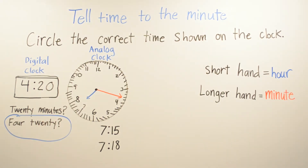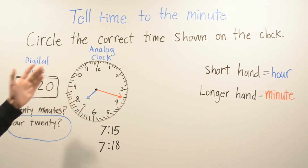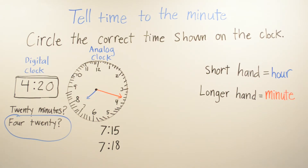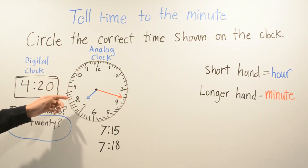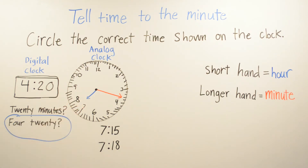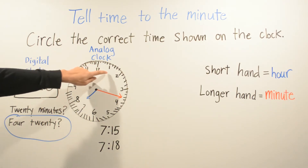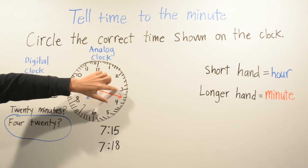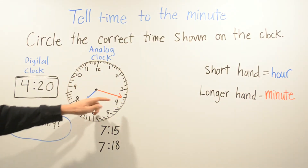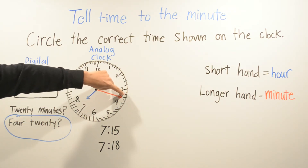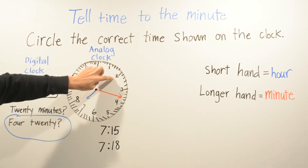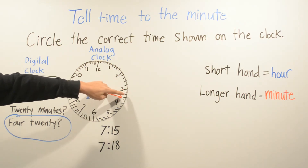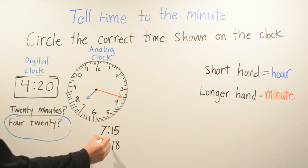Let's move on to the analog clock. We have to find our correct time. The smaller hand has passed the 7, but it hasn't got to the 8, so the hour is still 7. Now let's find our minute: 5, 10, 15. And once your minute hand is on these numbers, each line is a minute. So this is 5, 10, 15, 16, 17, 18. The correct time is 7:18.